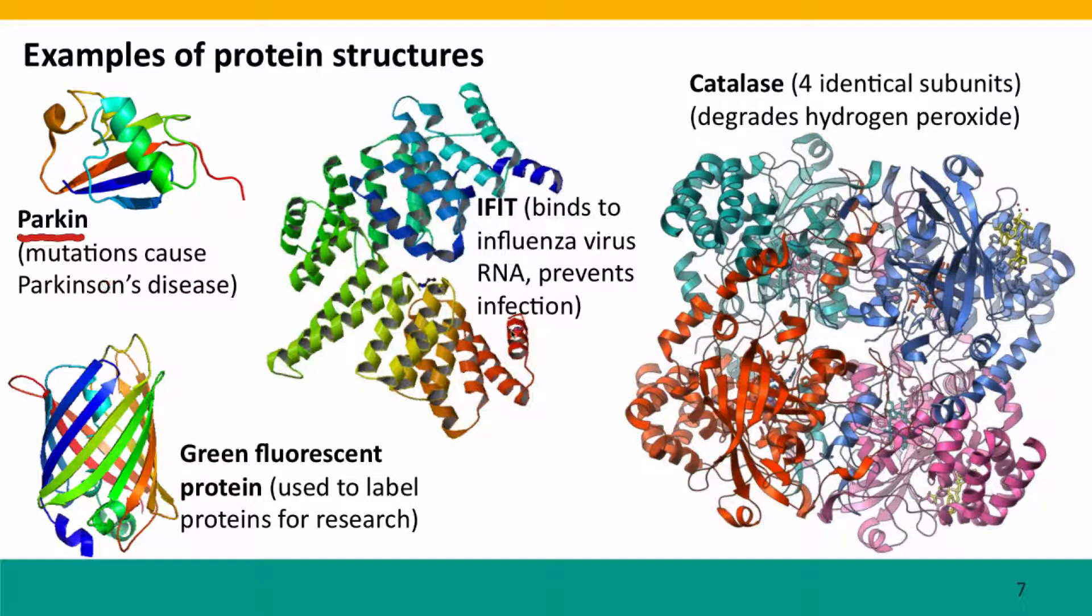Green fluorescent protein actually comes from a jellyfish, but it turned out to be extraordinarily useful for studying cell structure because you can genetically engineer it as a tag on other proteins. So they fluoresce, show green fluorescent light when you shine a UV lamp on them. And now we have a whole suite of rainbow fluorescent proteins derived from this protein.